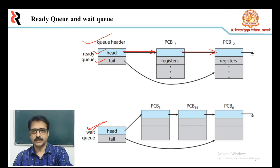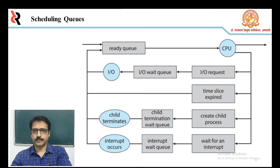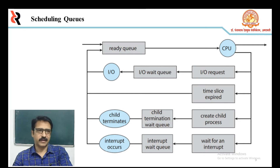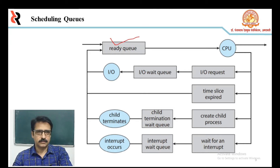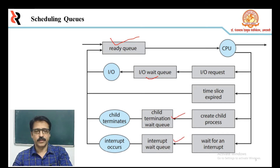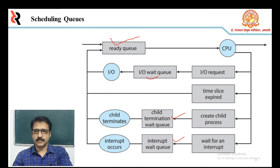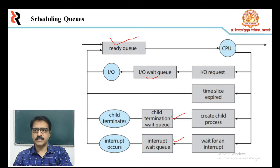A common representation of scheduling queues is a queuing diagram. Two types of queues are present: one is the ready queue, and the others are the wait queues — one for IO, one for other events, and one for when the time slice expires. Whenever a new process is created, it is put into the ready queue. The circles in the diagram represent resources.